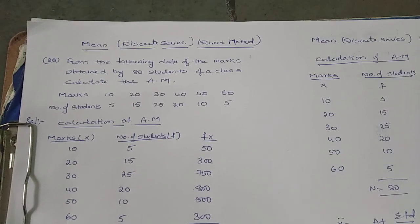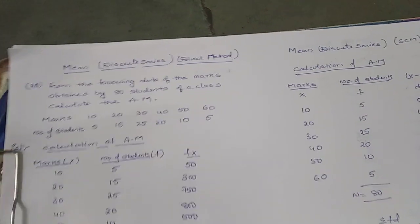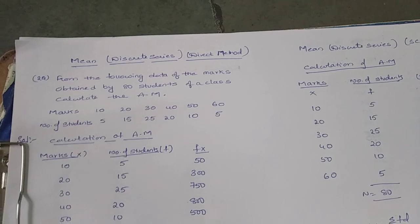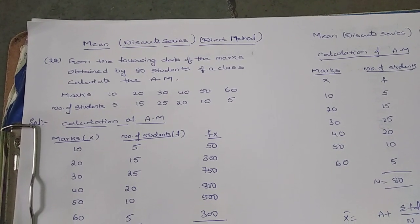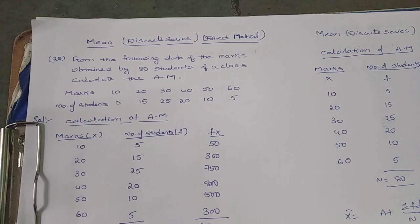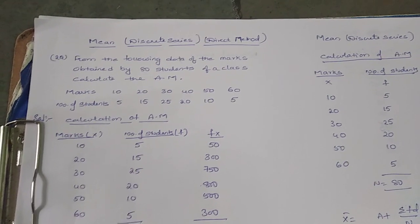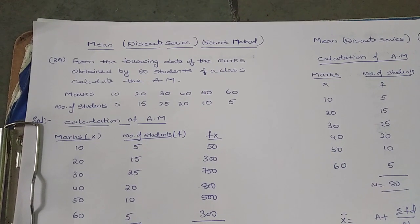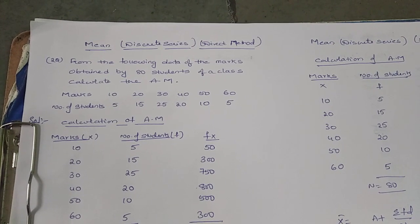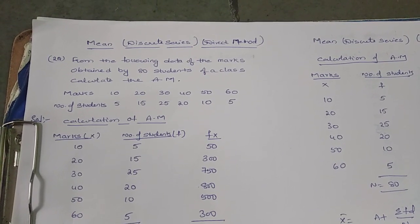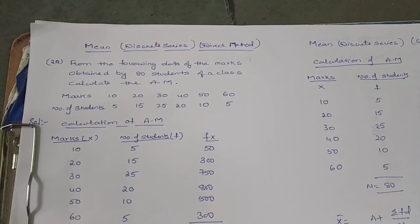Good morning. This is Business Statistics for second year students. In the previous class I explained mean for individual series — both direct and indirect methods. Now I am going to explain the mean for discrete series, covering both the direct and shortcut methods.